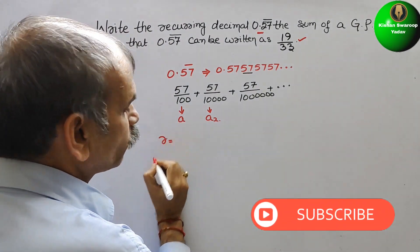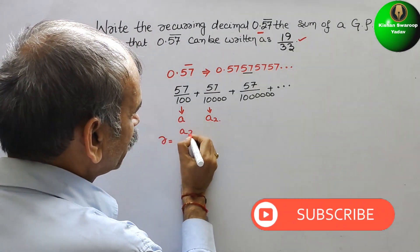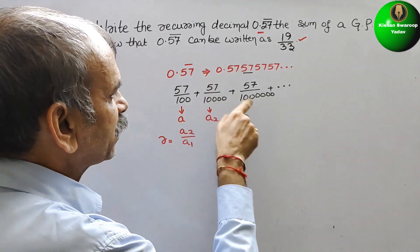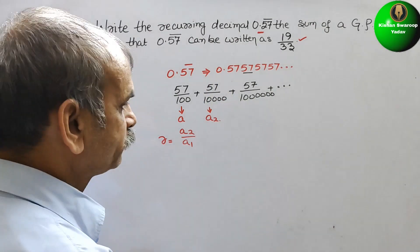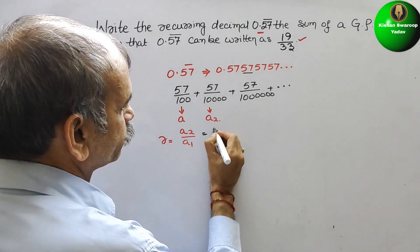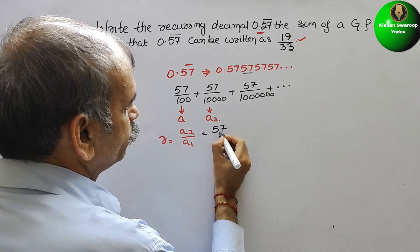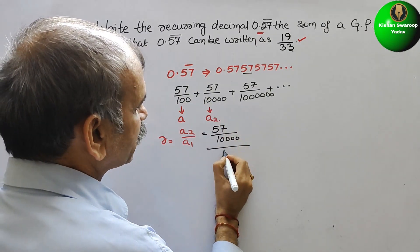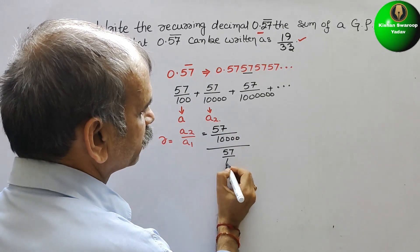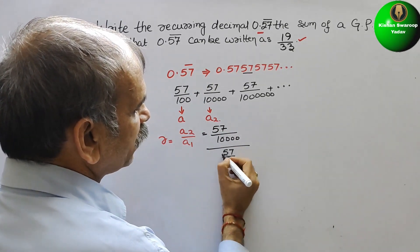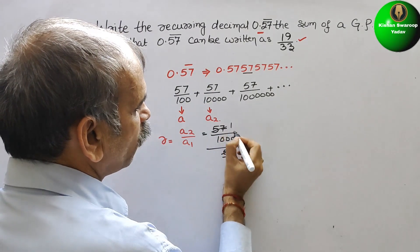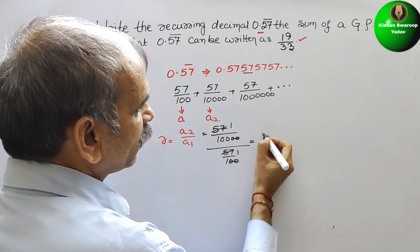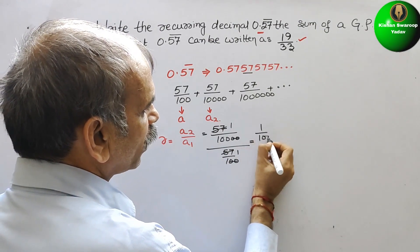R is nothing but A2 by A1. That is equal to 57 by 10,000 divided by 57 by 100. So you can see, 57 and 57 gone. Two zeros, two zeros gone. So we will get 1 by 100 as your R.